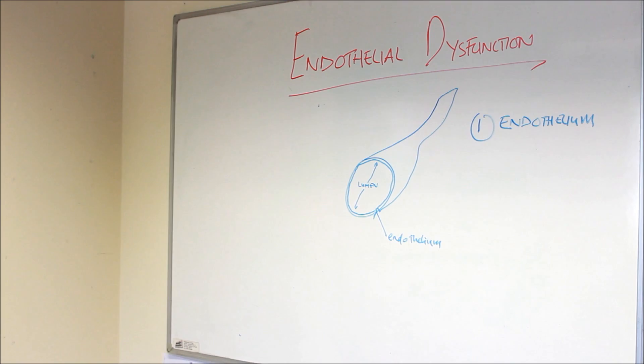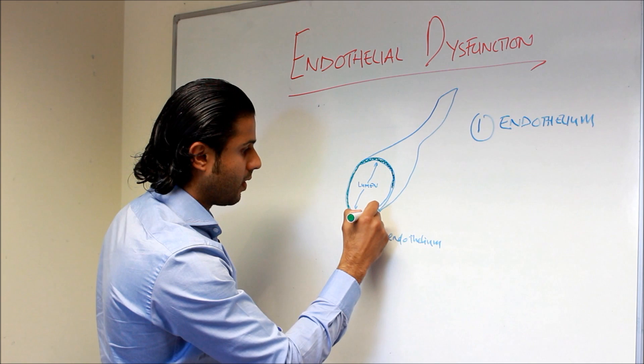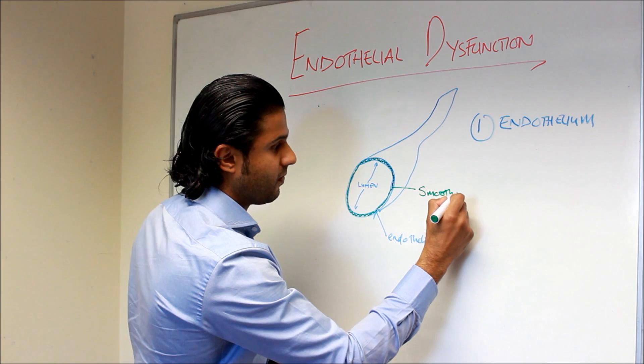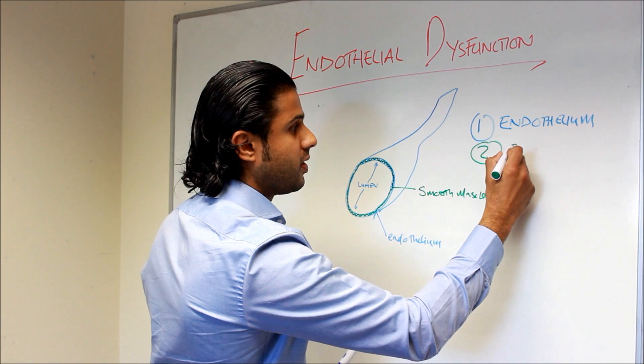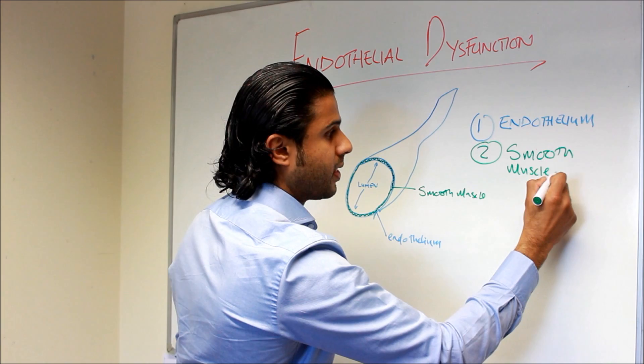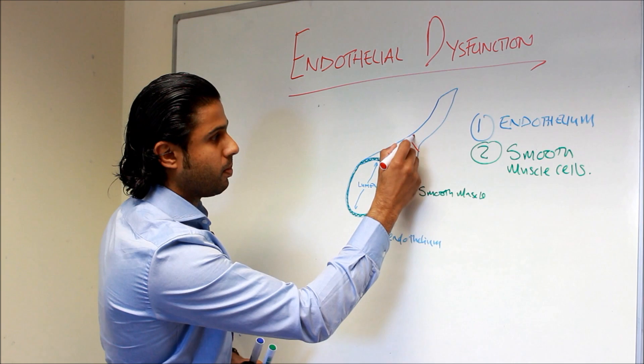We've also got the smooth muscle, which is the shaded part you can see here. This is the part of the blood vessel involved in causing dilation when it relaxes, or contraction when the smooth muscle contracts. So that's the second layer — the smooth muscle cells. The third layer can be found on the outside of the blood vessel and it's known as the adventitia.